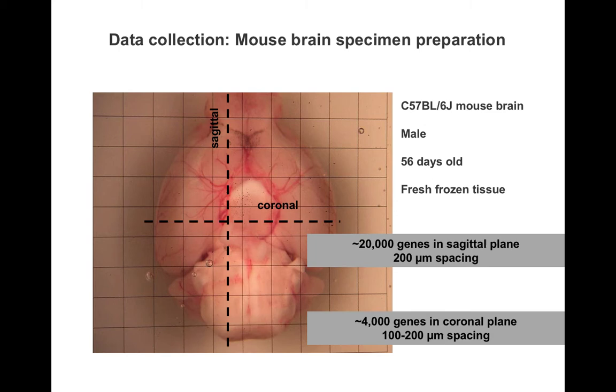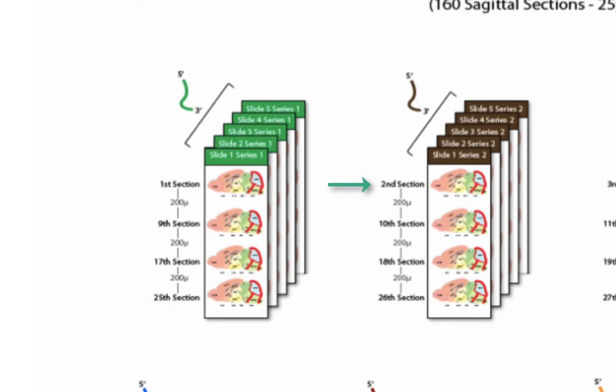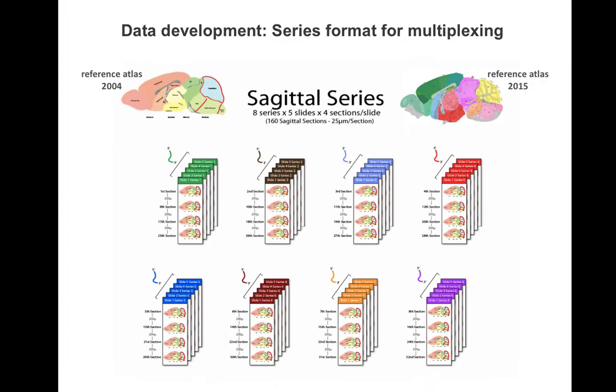Each brain was sectioned at 25 microns, as laid out in this diagram, with the first section, second section, etc., which results in 200 micron spacing between each section within each experiment.